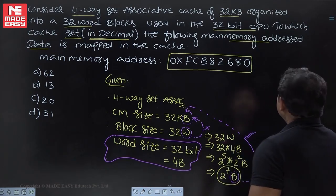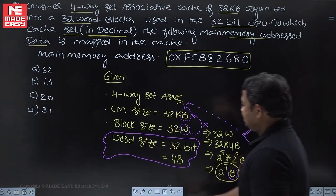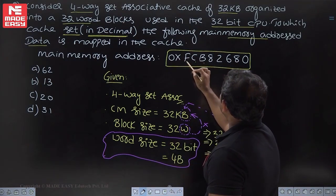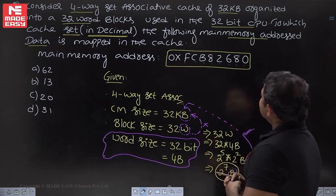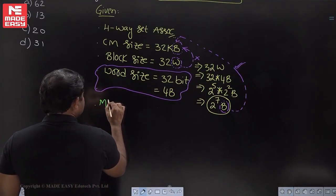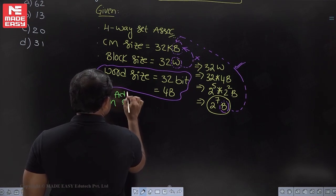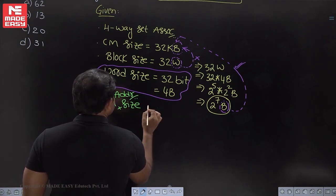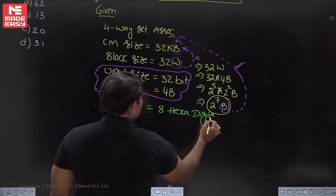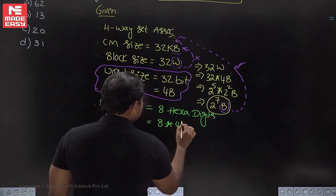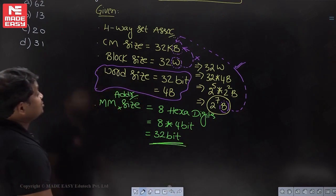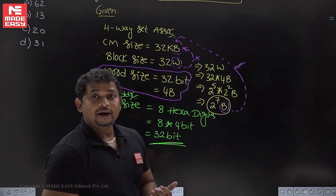Next, what is the main memory address size? The main memory address given in hexadecimal is 12345678 — it is an 8-digit hex address. One hexadecimal digit equals 4 bits, so 8 × 4 = 32 bits. Therefore, the main memory address size is 32 bits.